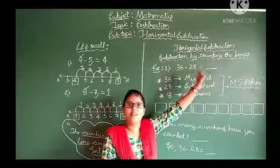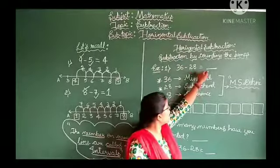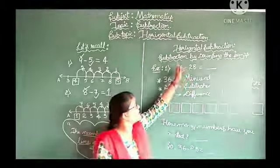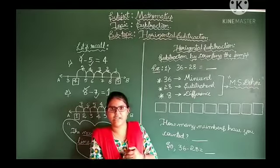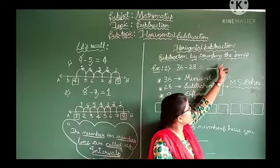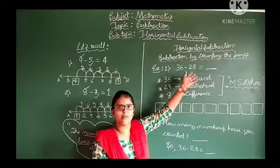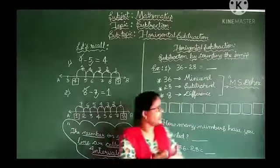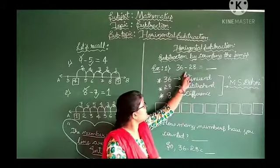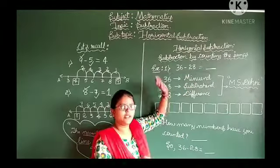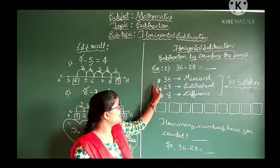Why do we call this horizontal subtraction? Because in our question, the numbers are arranged horizontally. Therefore, these kinds of questions are called horizontal subtraction. This is also one method of solving subtraction — subtraction by counting the jumps. We subtract the two given numbers by counting the jumps.